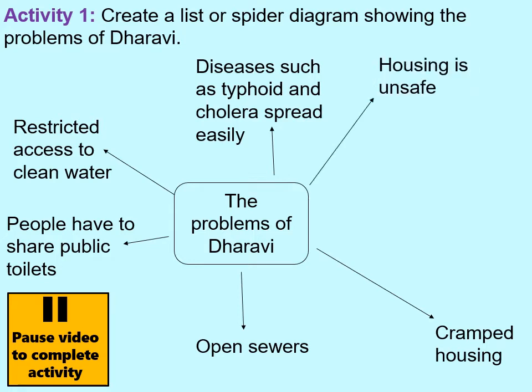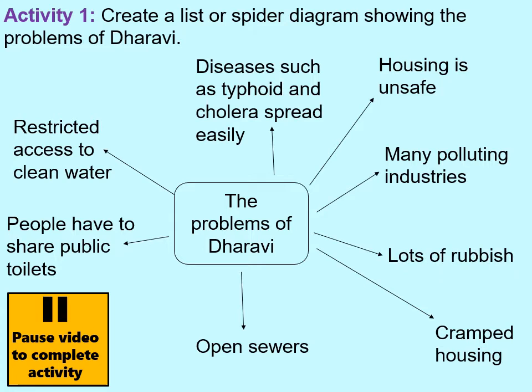Housing is unsafe: almost all of it is built without following proper housing regulations, which means houses could collapse under heavy rainfall, and if there's a fire, people might not be able to get out. Many industries within Dharavi are polluting, so air quality is really bad, making conditions worse for people with asthma and making residents generally unhealthier. There's also lots of rubbish. The streets are so narrow that rubbish collection is very difficult, so rubbish builds up; people throw it into rivers, polluting them — yet some people drink river water, creating a cycle of poor health due to unclean water and environment.